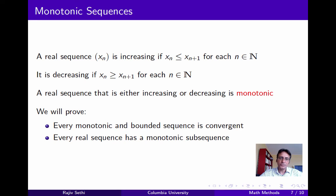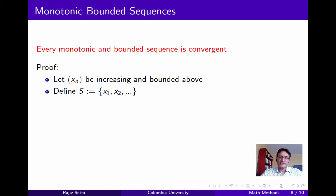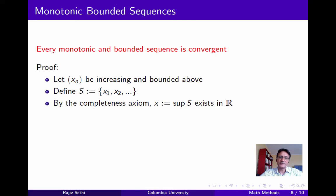We'll finish by proving two claims that together lead to the Bolzano-Weierstrass theorem: first, that every monotonic and bounded sequence is convergent; and second, that every real sequence has a monotonic subsequence. For the first claim, let xn be increasing and bounded above — the decreasing case follows analogously. Define S as the set of terms. By the completeness axiom, since S is bounded above, it has a supremum in R. Call this supremum x, and we'll show the sequence converges to x.